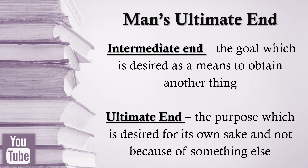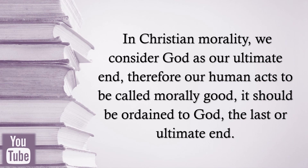There is also what we call intermediate end and ultimate end. The intermediate end is the goal or purpose which is desired as a means to obtain another thing, while the ultimate end is the purpose which is desired for its own sake and not because of something else. When we attain the ultimate end, it completes our action and stops all further acts. In Christian morality, we consider God as our ultimate end. Therefore, for our human acts to be called morally good, they should be ordained to God, the last or ultimate end.